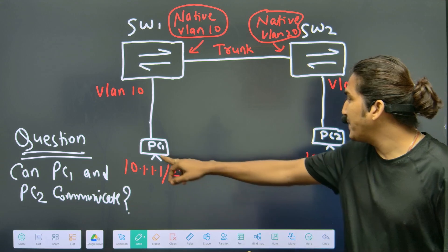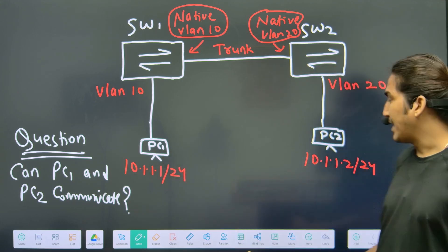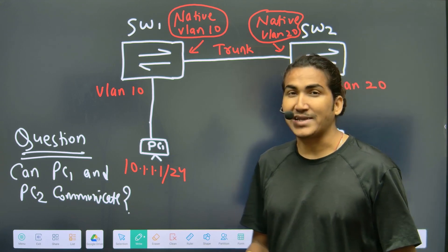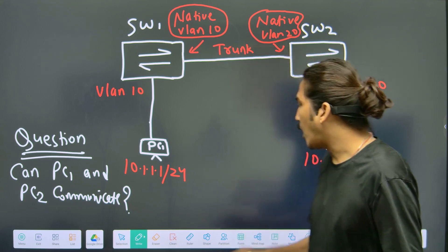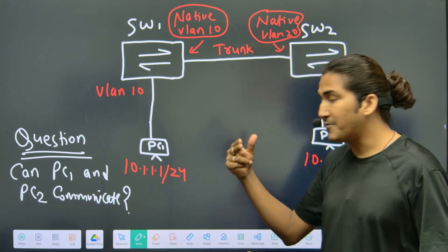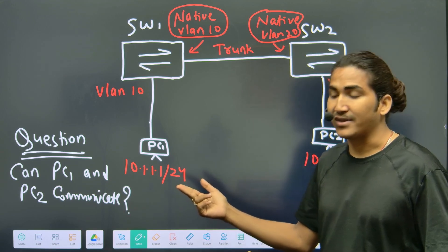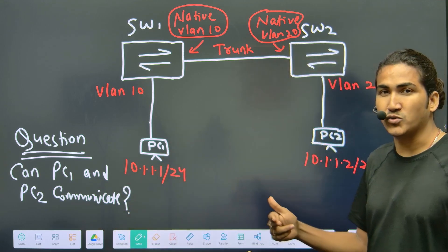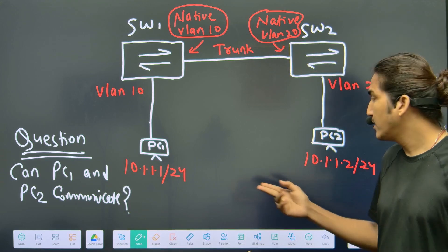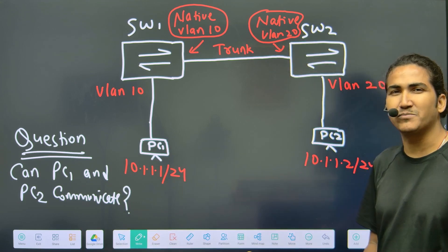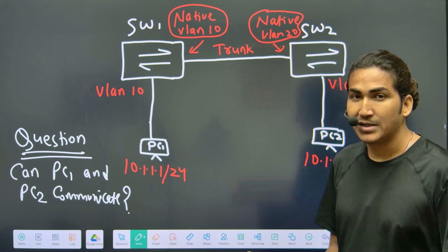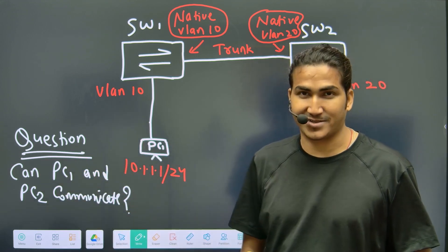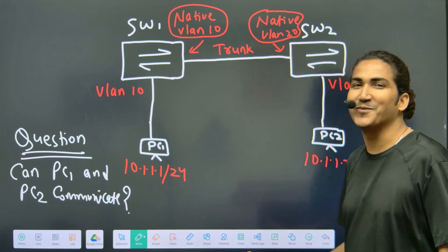The IP address on PC1 is 10.1.1.1 and on PC2 is 10.1.1.2. You might be thinking: how can two different VLAN devices use IP addresses from the same subnet? What we have learned is that different VLANs should have different IPv4 subnets — but that is exactly the scenario here.